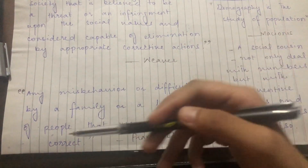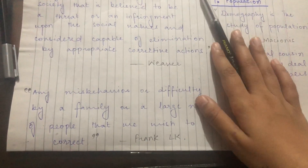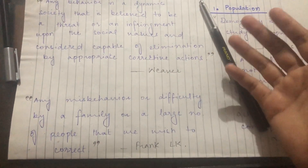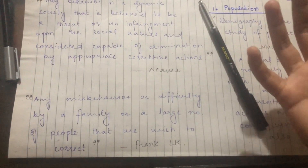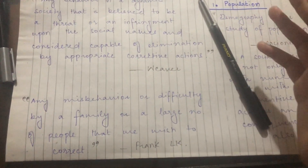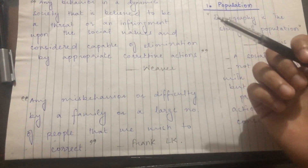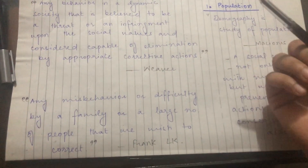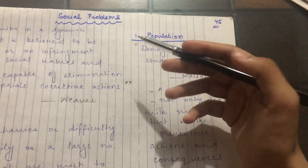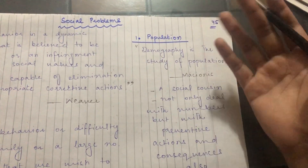Next we have Frank L, who says a social problem is any misbehavior or difficulty by a large number of people that we wish to correct. This means that if a particular person or family adopts misbehavior, we will not consider it a social problem. But if some families or a group of people conduct misbehavior, and people at large are trying to correct it, then we consider it a social problem.